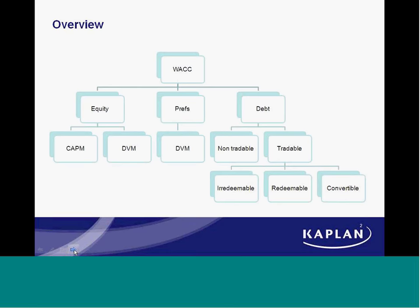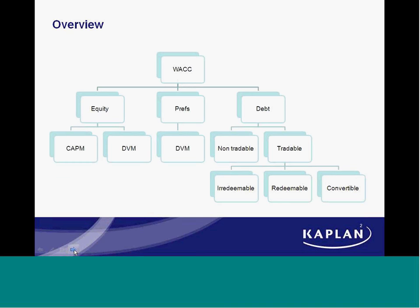Let's make a start then with the Cost of Capital Masterclass. This is the overview of how we're going to build up the weighted average cost of capital. What we're aiming to pull together is the weighted average of all sorts of different sources of finance that have been used as part of a business's financial structure. We're likely to include equity — that's our ordinary shares — and debt, and different types of debt. Some companies also have preference shares, so I've popped those on the presentation as well.